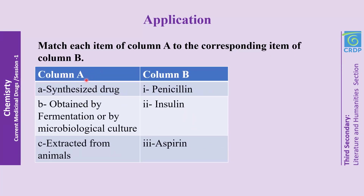Application: Match each item of Column A to the corresponding item of Column B. Column A contains: (a) a synthesized drug, (b) obtained by fermentation or microbiological culture, (c) extracted from animals. Column B contains: (1) penicillin, (2) insulin, (3) aspirin. The answer is: (a) goes with aspirin, (b) goes with penicillin, and (c) goes with insulin.